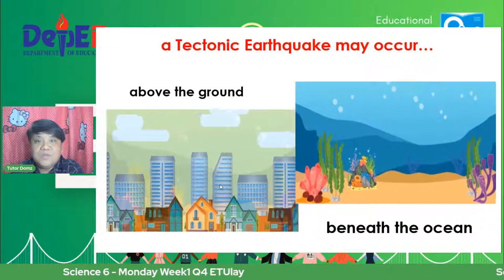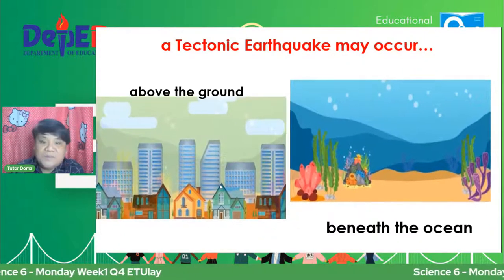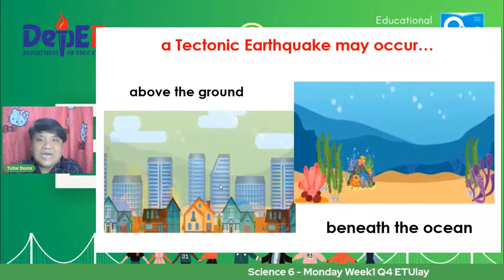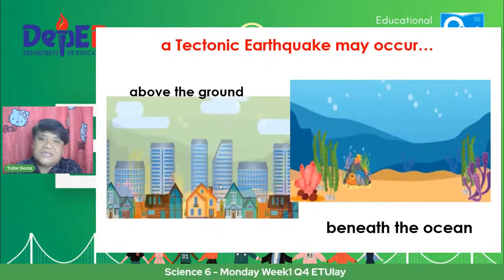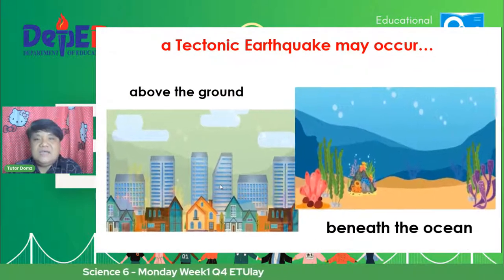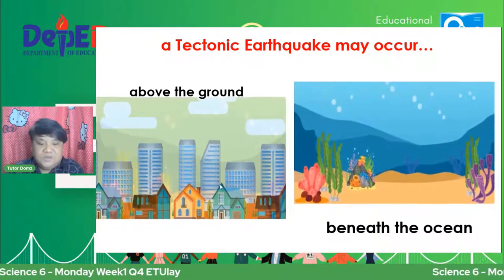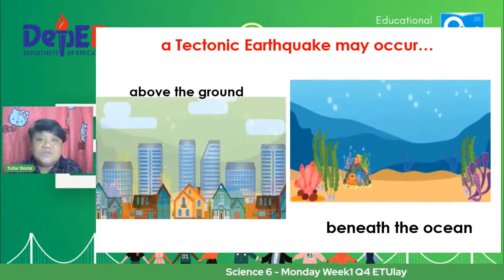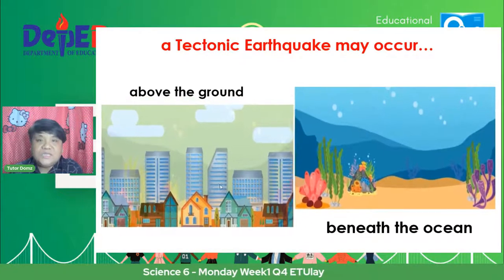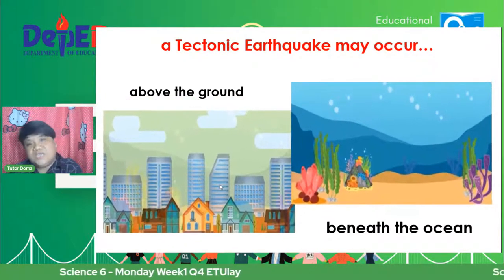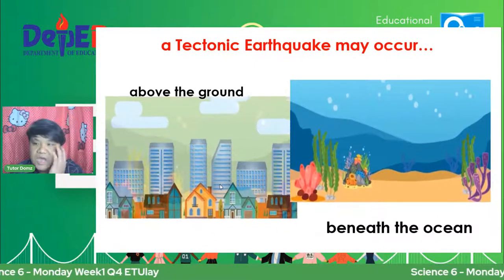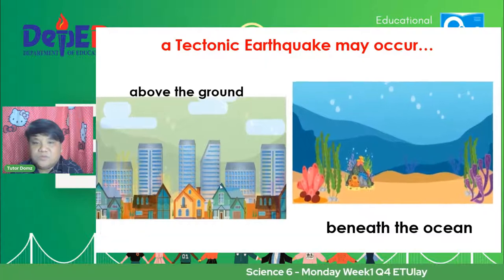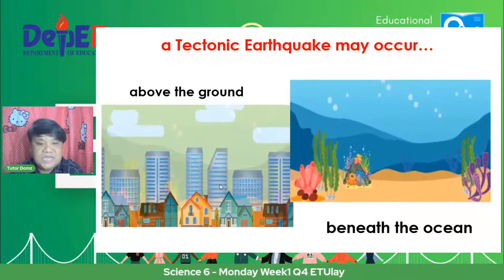Yung pag-angat ng tubig mula sa ocean papunta sa lupa — yun yung pinaka-nakakatakot na part, lalo na dun sa mga nakatira sa gilid ng dagat or ng Pacific Ocean. Pag nagyanig o nagkaroon ng earthquake sa ilalim ng tubig, lahat ng tubig na nasa ocean pupunta ngayon sa ibabaw ng lupa. Mag-iingat tayo.